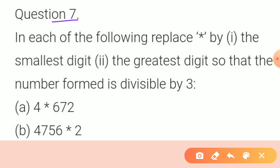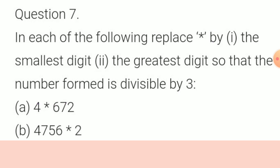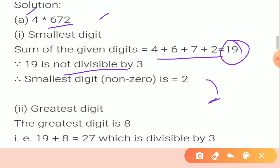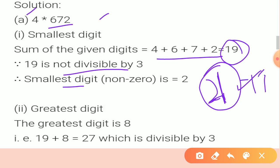Question 7: in each of the following, replace star by the smallest digit and the greatest digit so that the number formed is divisible by 3. Part A — to find the smallest digit, add all the digits of the given number; we get 19. 19 is not divisible by 3. The next number after 19 divisible by 3 is 21. So the smallest digit is 21 minus 19 = 2.